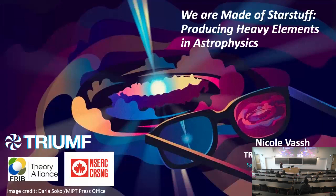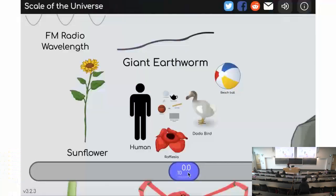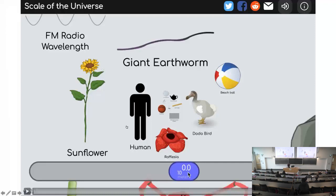Thank you so much for coming this Saturday morning. I'm really excited by the opportunity to tell you some of these things about how elements are made in astrophysics. Before we get started, we're going to be talking about things on very small scales, well outside the human experience — very small and very large. So that you have some visual intuition about the objects we're talking about, I'm going to play this video, which is going to demonstrate scales.